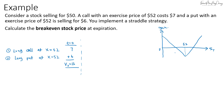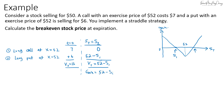There are two breakeven prices for the straddle. For the lower breakeven price s1, when the spot price equals s1, the put option will be in the money and the call will be out of the money. The payoff is $52 minus s1, so the gain is ($52 minus s1) minus $13 equals zero. Solving, s1 equals $52 minus $13, which is $39. You can verify: $52 minus $39 is $13, and $13 minus $13 gives a gain of zero.